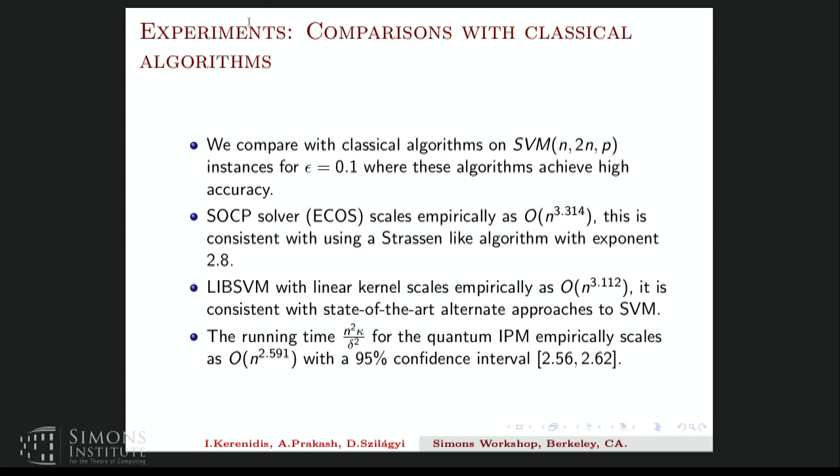So the comparisons we made were with the classical SOCP solver, the ECOS, and the libSVM with linear kernel. So we found that for these instances on the last slide, the ECOS solver scales empirically as N^3.314. And this is more or less consistent with using a Strassen-like matrix multiplication algorithm with exponent 2.8. And the libSVM scales better. It's N^3.112. It's consistent with alternate approaches to SVM. Like one doesn't have to solve the SOCP to do SVM. There are other techniques for it. And then we look at the scaling of this quantum running time, which is N squared κ over δ squared. And we find a 95% confidence interval in the range 2.56 to 2.62.